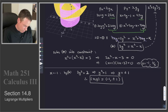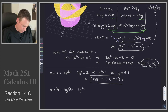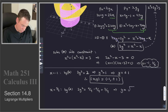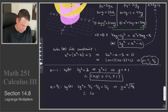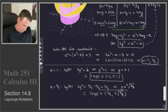Are there more solutions? We still check x equals 3 halves. Plugging into star: 2y squared equals (3/2) squared minus 3/2, which is 9/4 minus 6/4 equals 3/4, so y squared equals 3/8 and y equals plus or minus the square root of 3/8. Therefore we also get the points (3/2, +√(3/8)) and (3/2, -√(3/8)) as solutions.